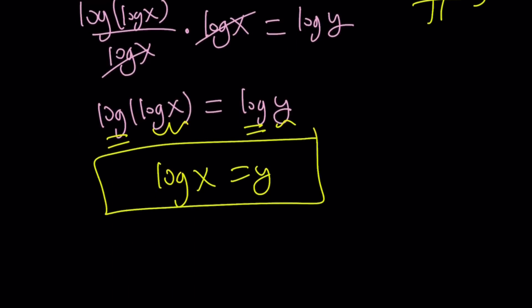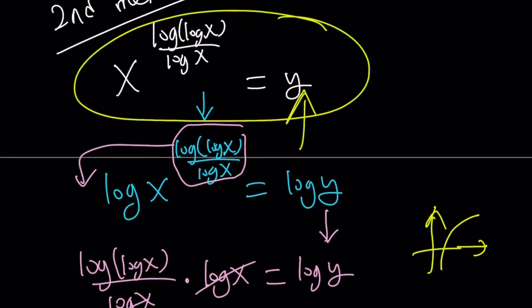One more time, right? That was the second method. And the second method basically focused on calling this y, logging both sides, and then simplify. So this doesn't require a lot of properties. So I kind of like the second method better, especially if you're new to logs.